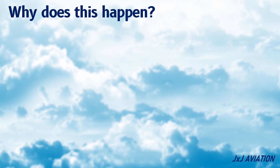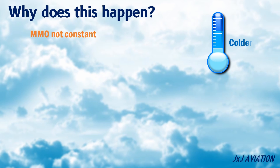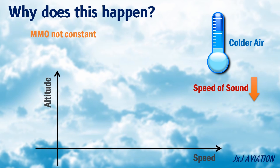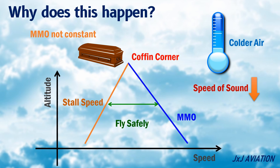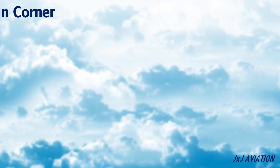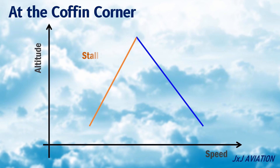The MMO is not constant. As the altitude increases, the air becomes colder, which means the speed of sound decreases. So the MMO decreases as the altitude increases. At the coffin corner, the stall speed and the MMO lines intersect. If the aircraft slows down, it will lead to flow separation, resulting in a stall.